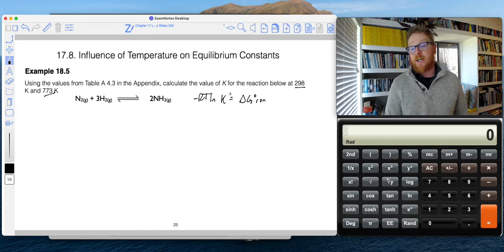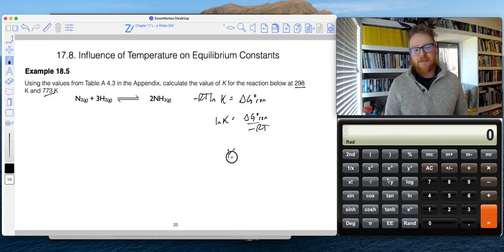our equation says negative RT natural log of K equals the standard free energy of reaction. So let's suppose I wanted to isolate K. So that's going to be natural log of K equals standard free energy of reaction divided by negative RT, and to isolate K, I take the E of both sides. So now that's K equals E to the negative delta G of reaction divided by RT.